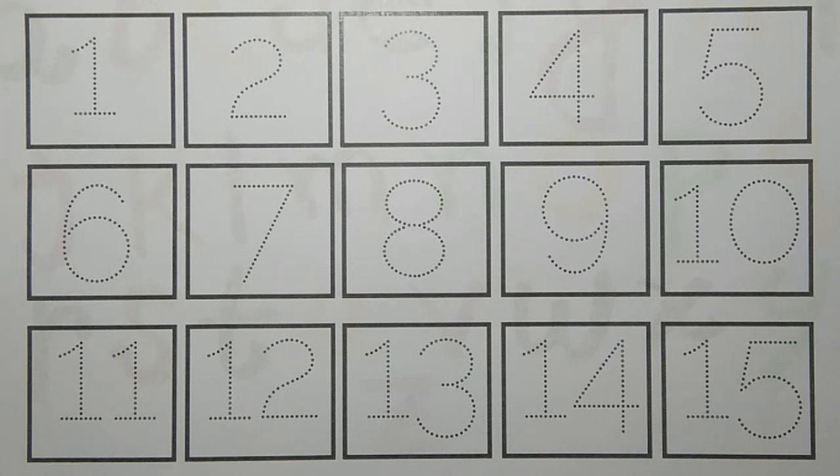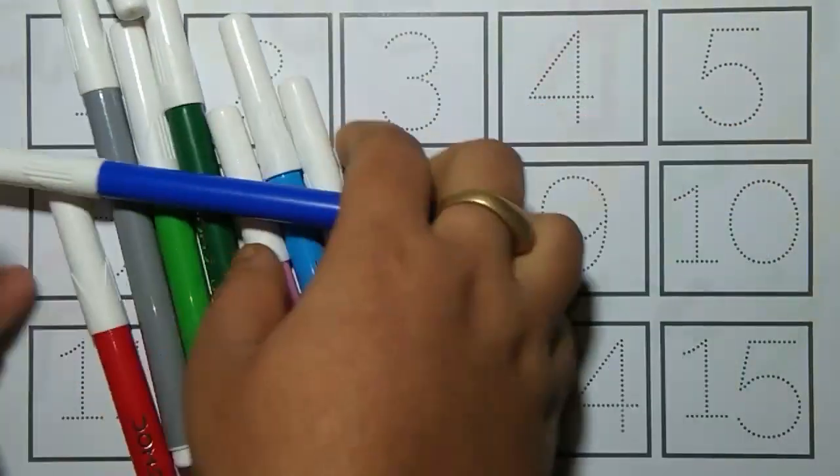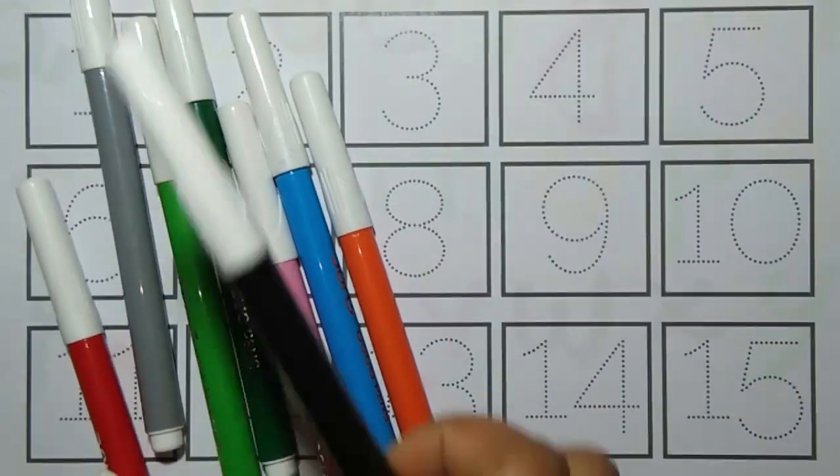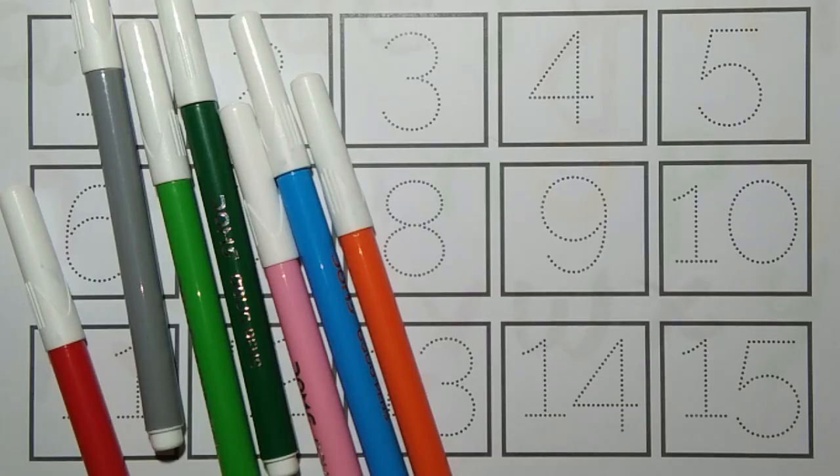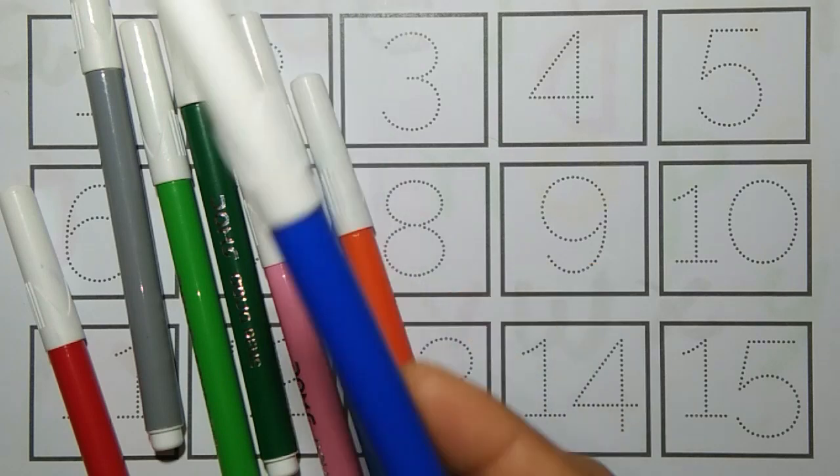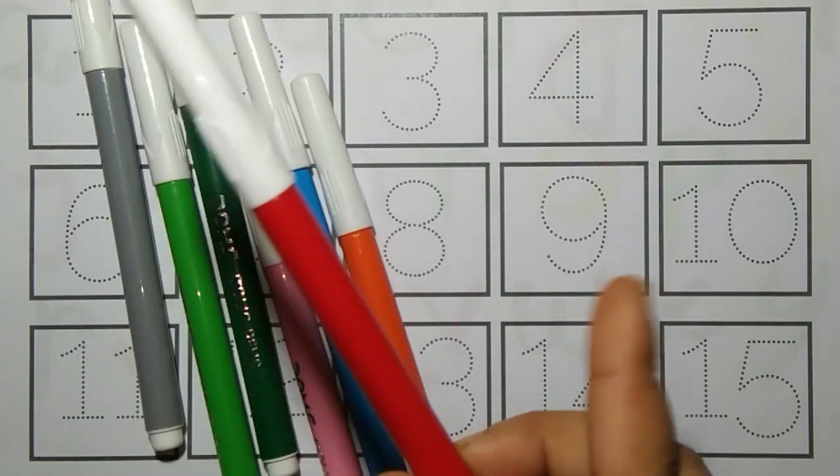First, we know the name of the colors. Black color. This is black color. Blue color. This is blue color. Red color. Red color.